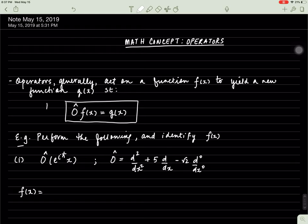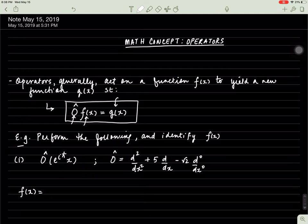Generally we can write it in this form. You have the operator, it acts on the function f of x, and you're producing a new function g of x. Basically, if you have a function x and you square it, you get x squared, which is a new function. The operation was squaring it, and the new function turned out to be x squared. We're going to do something like that again.